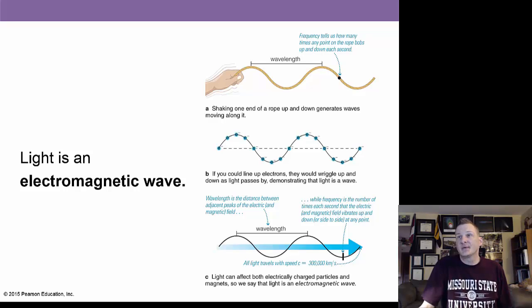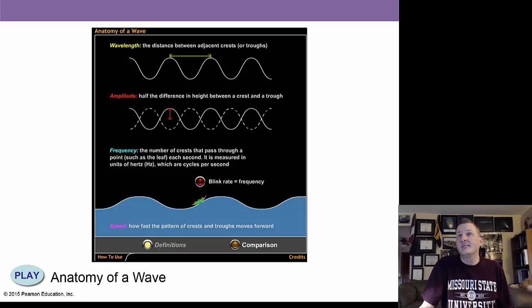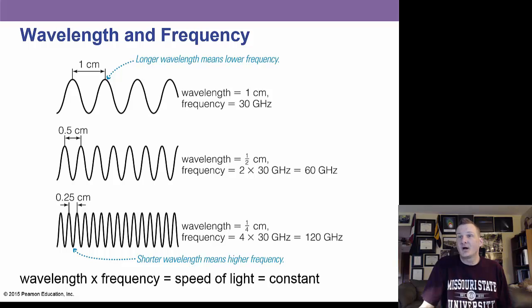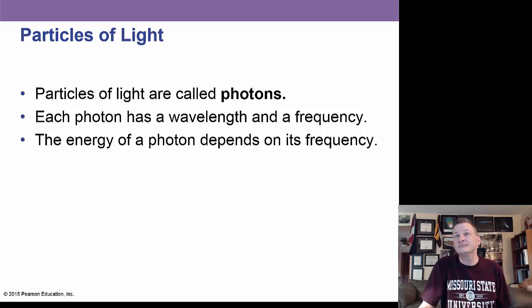Light is an electromagnetic wave. And we can talk about some of the properties of a wave here. Wavelength is a measurement from a peak of the wave down to another peak of another wave. If you shorten the wavelength, you increase the frequency. Particles of light are called photons, and each photon has a wavelength and a frequency to it. And the energy of a photon depends on that frequency and wavelength.